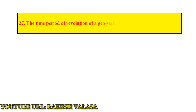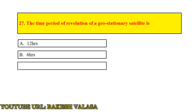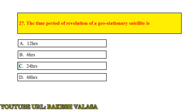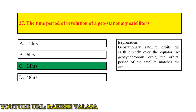Question number 27: The time period of revolution of a geostationary satellite is — Answer: 24 hours. Explanation: A geostationary satellite orbits the earth directly over the equator. At geosynchronous orbit, the orbital period of the satellite matches the rotation of the earth, that is 24 hours.